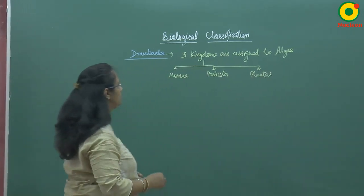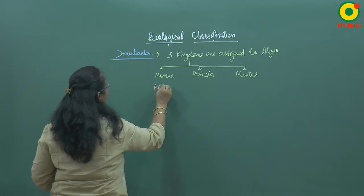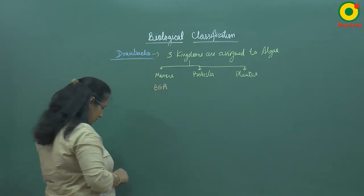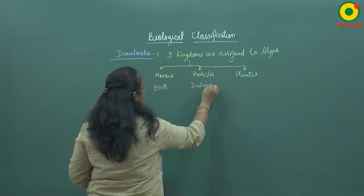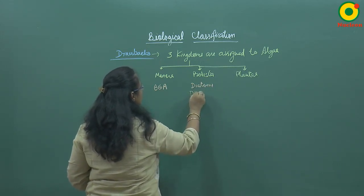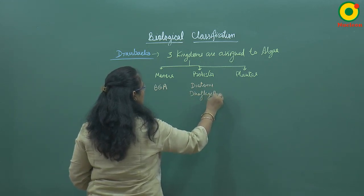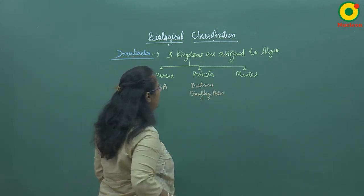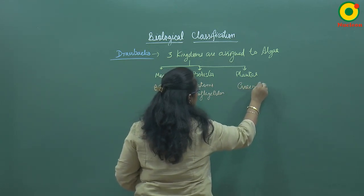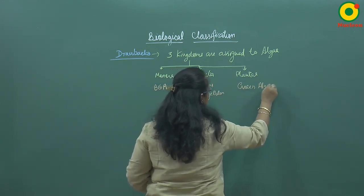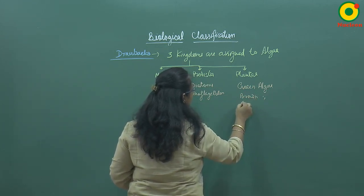For example, in Monera you can take Blue Green Algae; in Protista there are Diatoms and Dinoflagellates; and in Plantae there are Green Algae, Brown Algae, and Red Algae.